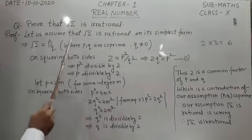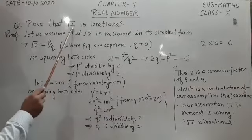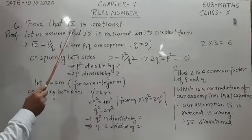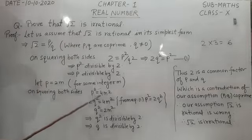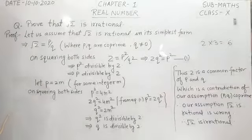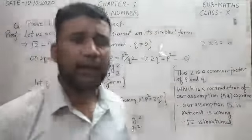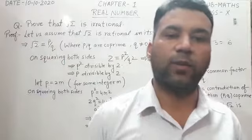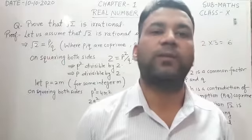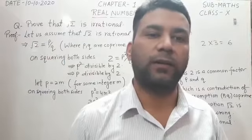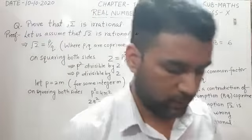Similarly you can prove root 3, root 5, and root 7 are irrational. In our next video we will discuss some more important questions of Chapter 1. Thank you, students.